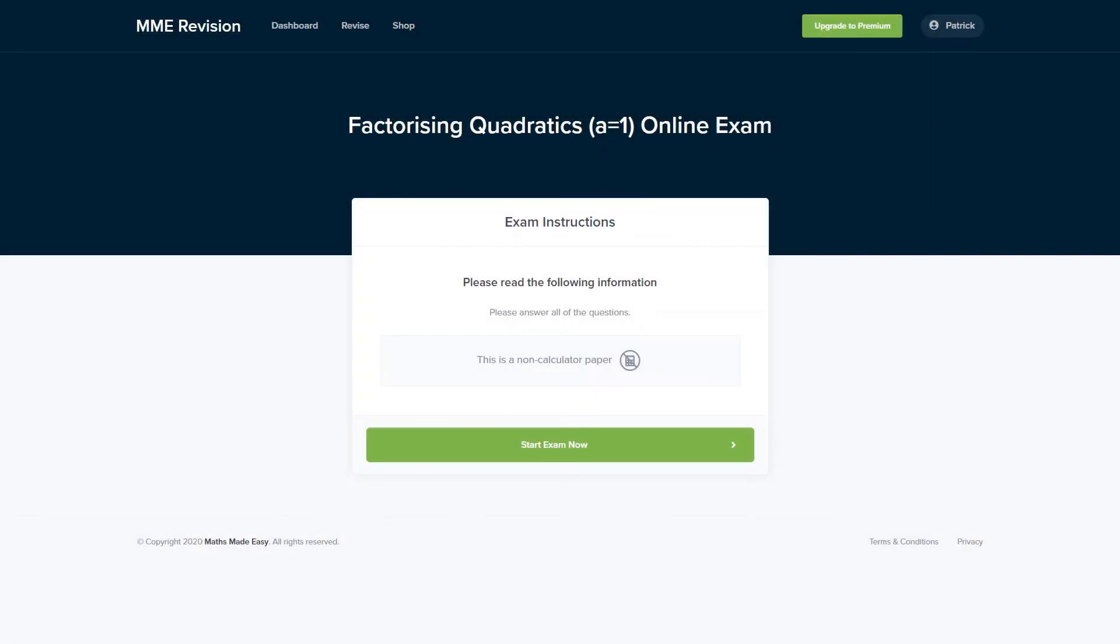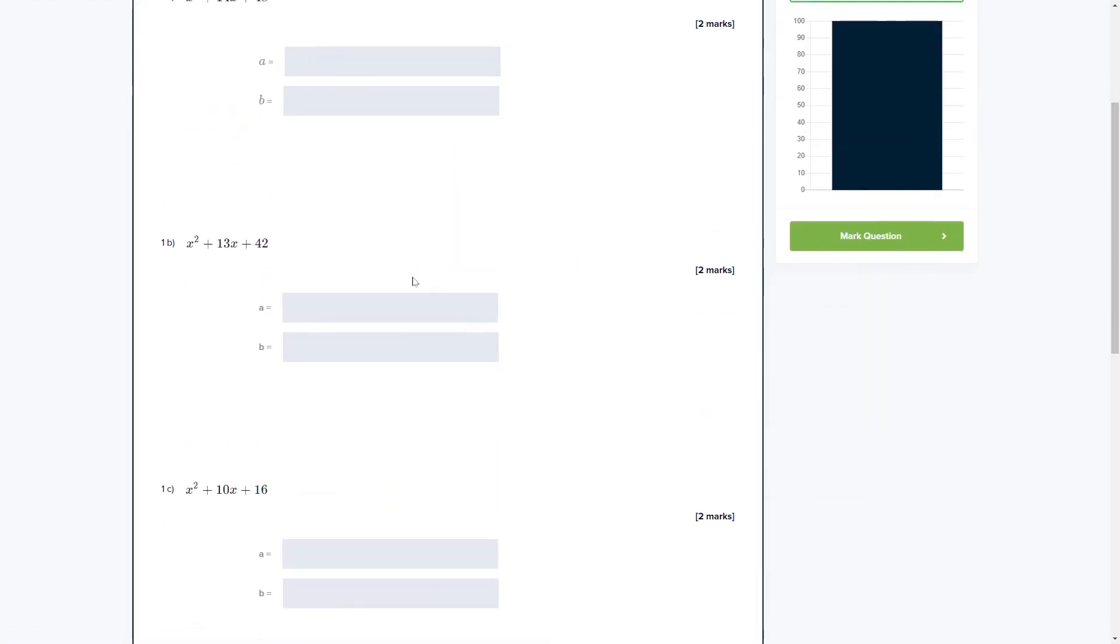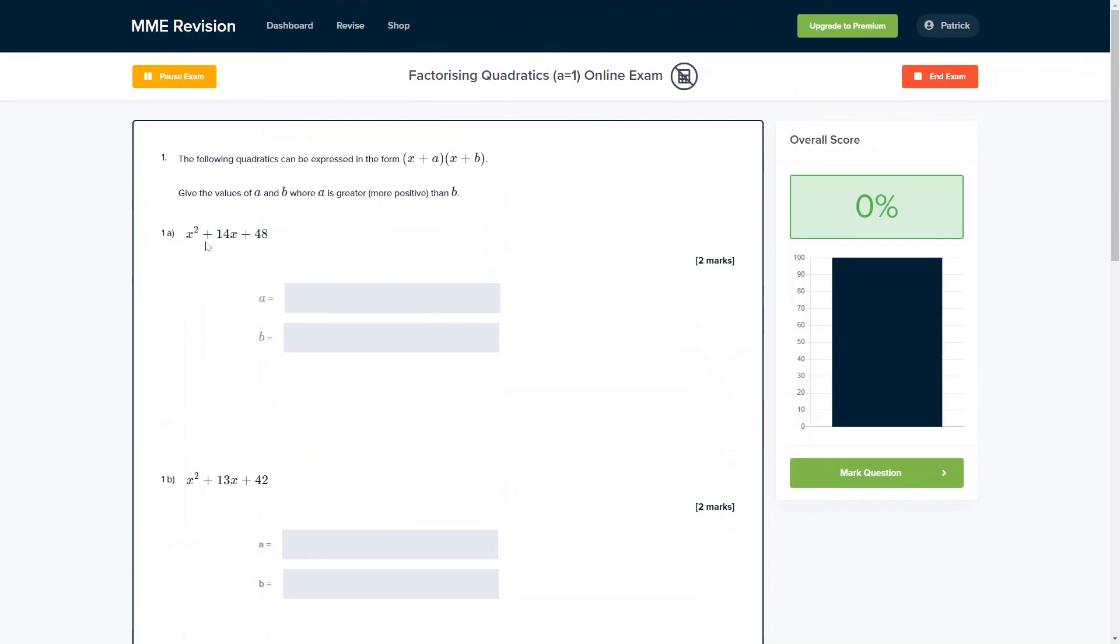If you're feeling confident about factorizing quadratics, you can get some practice with our online exam. This is available through our revision platform, where you'll find different questions to have a go at. You'll receive instant feedback allowing you to work out where you're going wrong and how you can improve for your exam. If you're interested, click the link below.